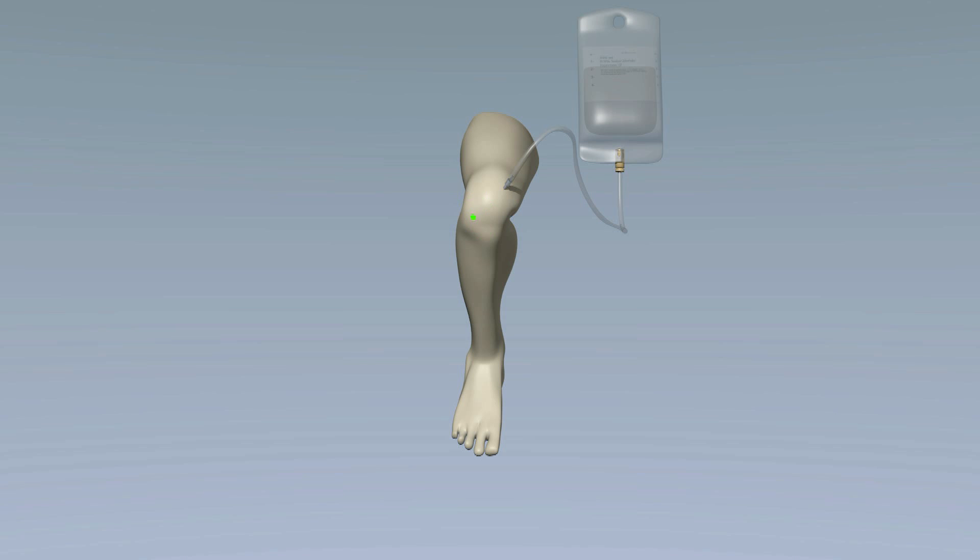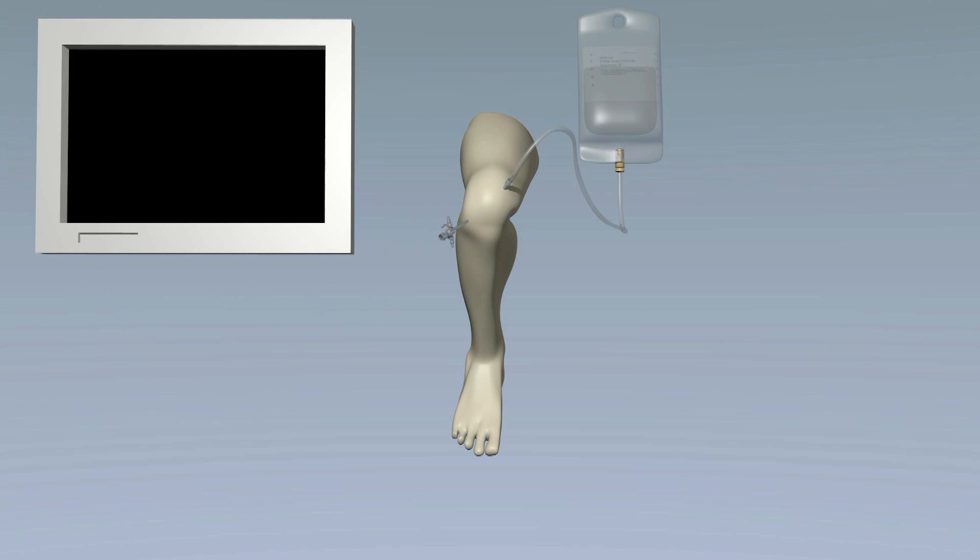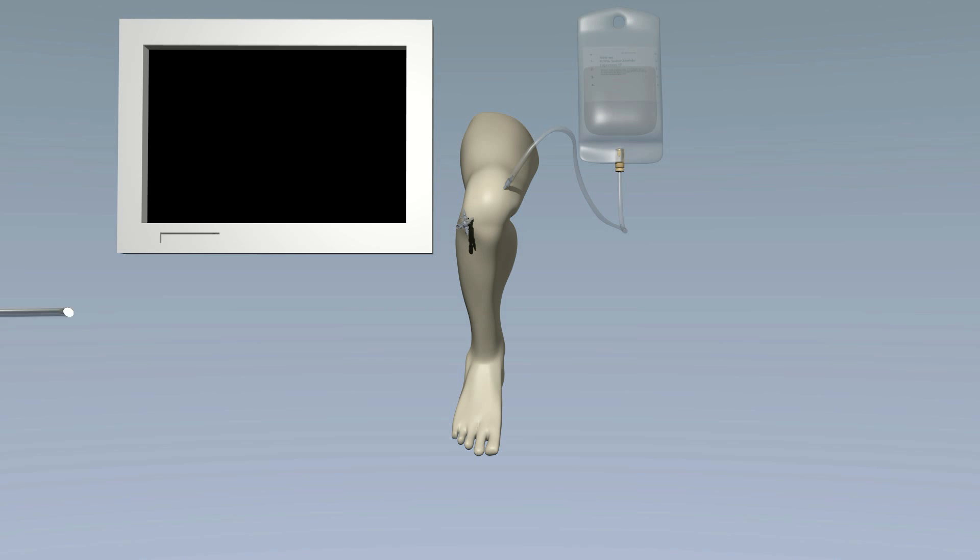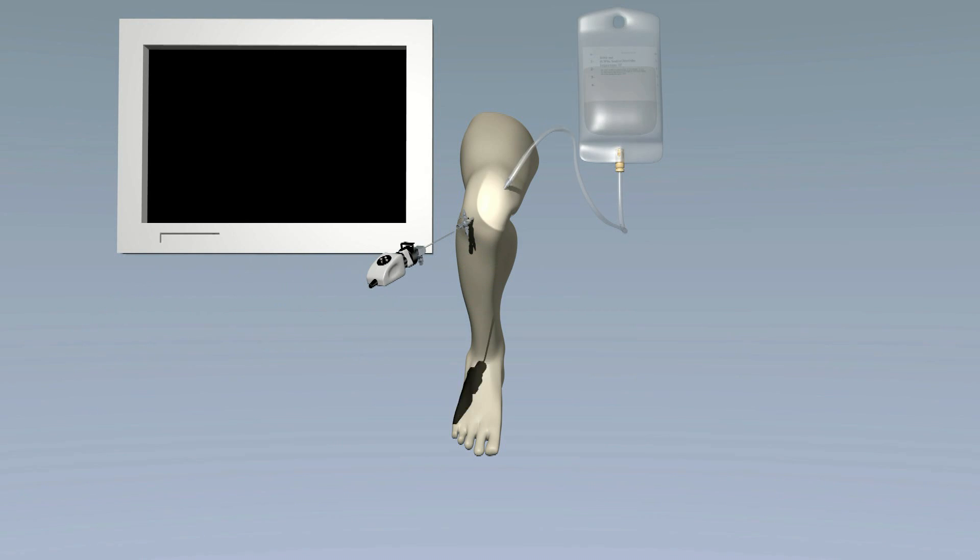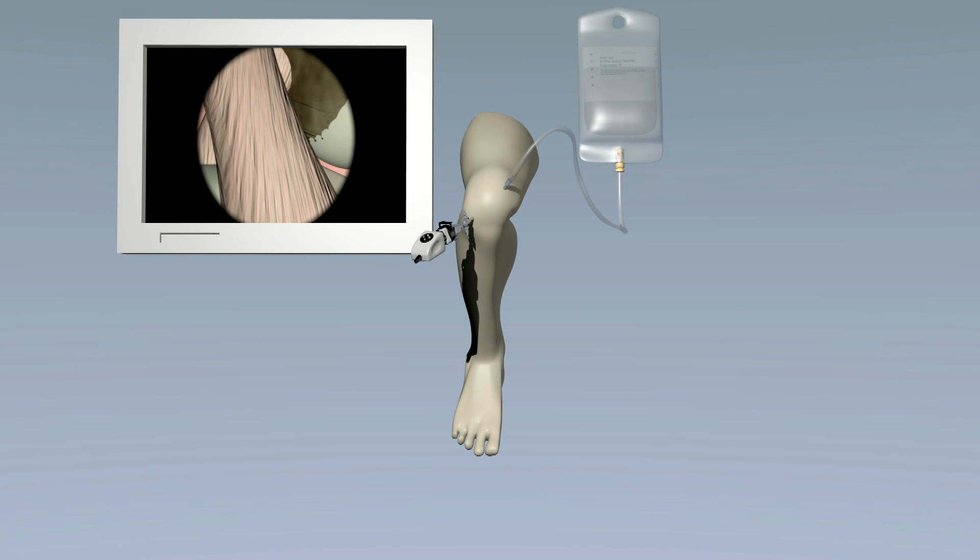One incision becomes a portal for the camera. The camera is long and slender which makes it easy to fit through the portal. Fiber optic cables carry the signal from the camera to a monitor. The surgical team can then view the inside of the knee joint on the screen.